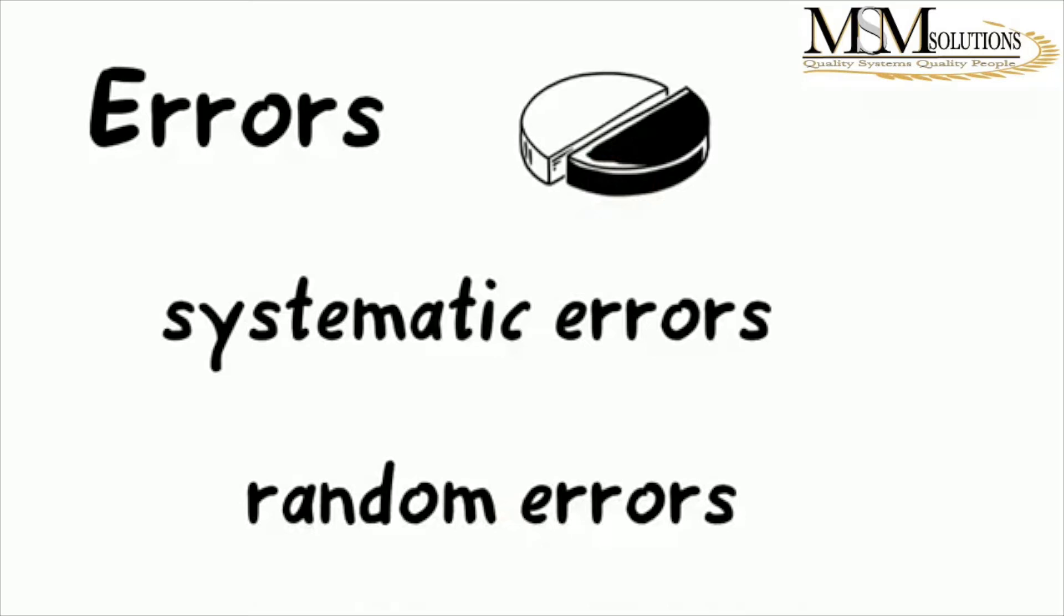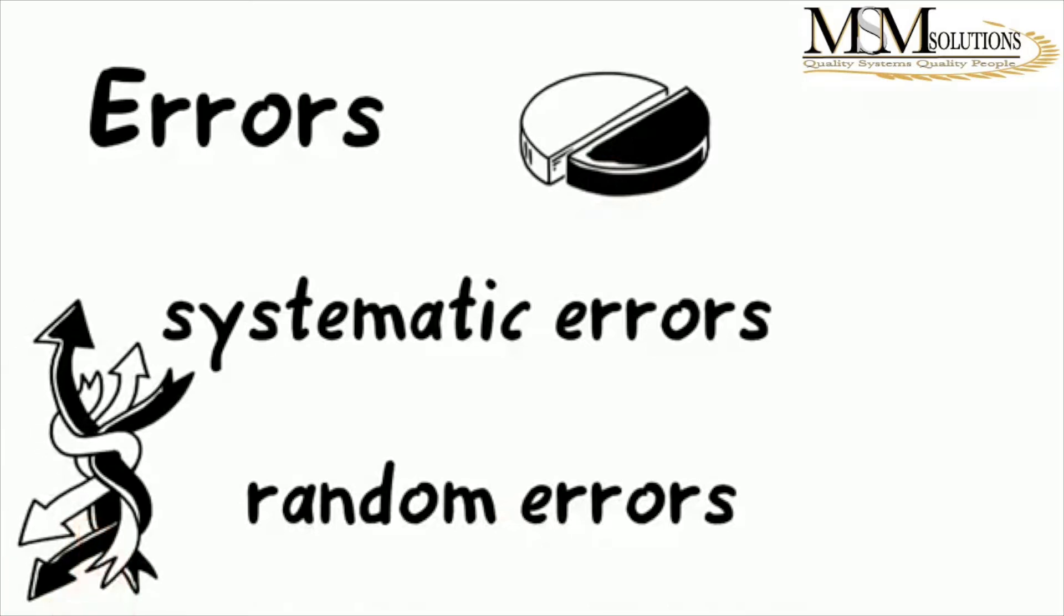Random errors vary and are very unpredictable from one measurement to another, while systematic errors have the same value or proportion for every measurement.